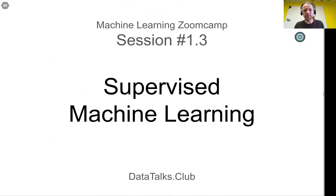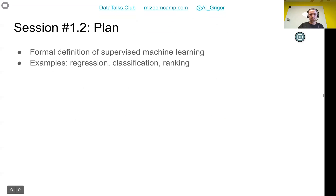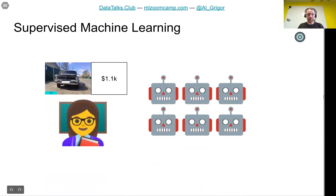Welcome back. This is the third lesson of our first session of the Machine Learning Zoom Camp. We will talk about supervised machine learning — defining it more formally and covering a couple of examples like regression, classification, and ranking.